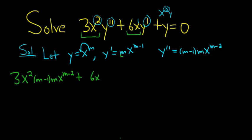And then we have y prime, which is right here. So m, x to the m minus 1, plus y, which we said was x to the m. That's all equal to 0.